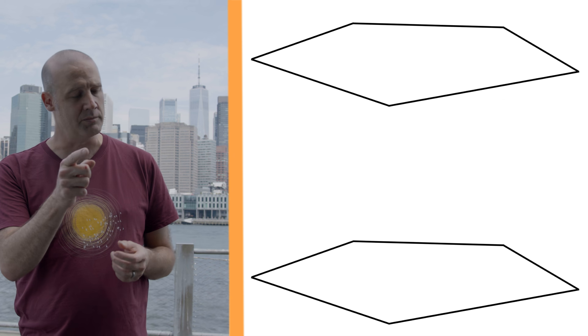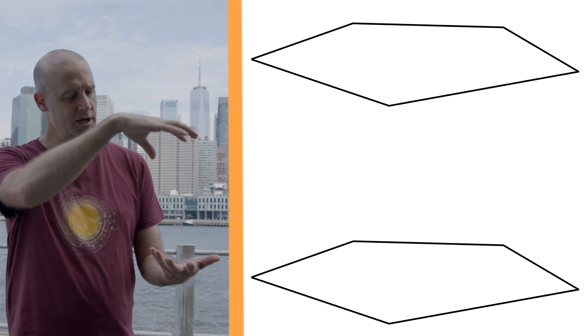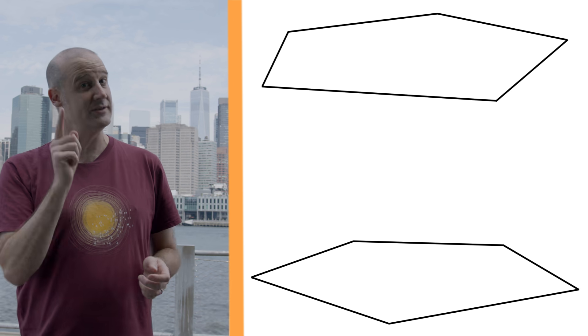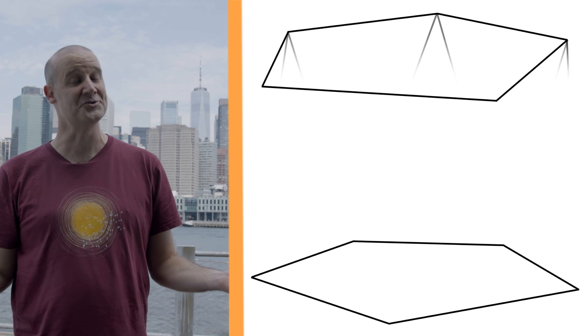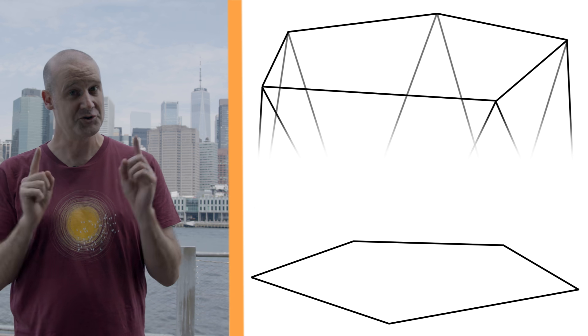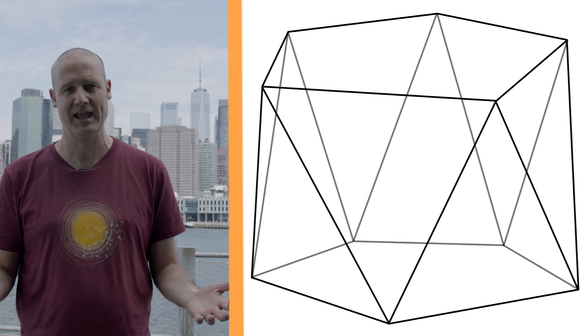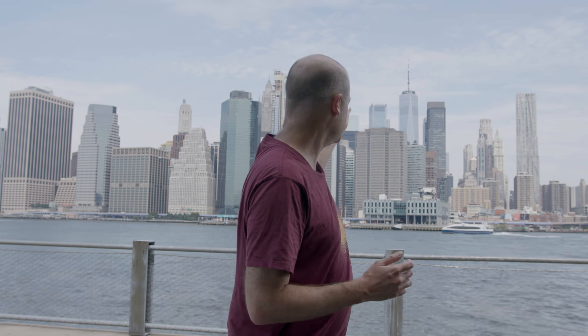Whereas an anti-prism: you take those two parallel polygons, you give them a twist so they're perfectly offset, and instead of using rectangles, you use triangles — twice as many triangles. There are some amazing anti-prism shapes out there. In this case, we have a square anti-prism. It's such a good shape.